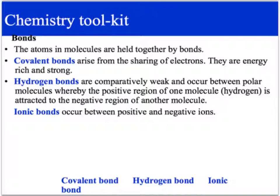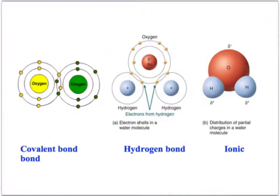Hydrogen bonds occur between polar molecules where the positive region of one molecule — the hydrogen — is attracted to the negative region of another molecule. You do come across hydrogen bonds when we look at enzymes and tertiary structure; you may read about it in your textbook, but you'll never have to identify one on an exam. Ionic bonds occur between positive and negative ions — remembering that an ion is an element or a molecule with a charge.